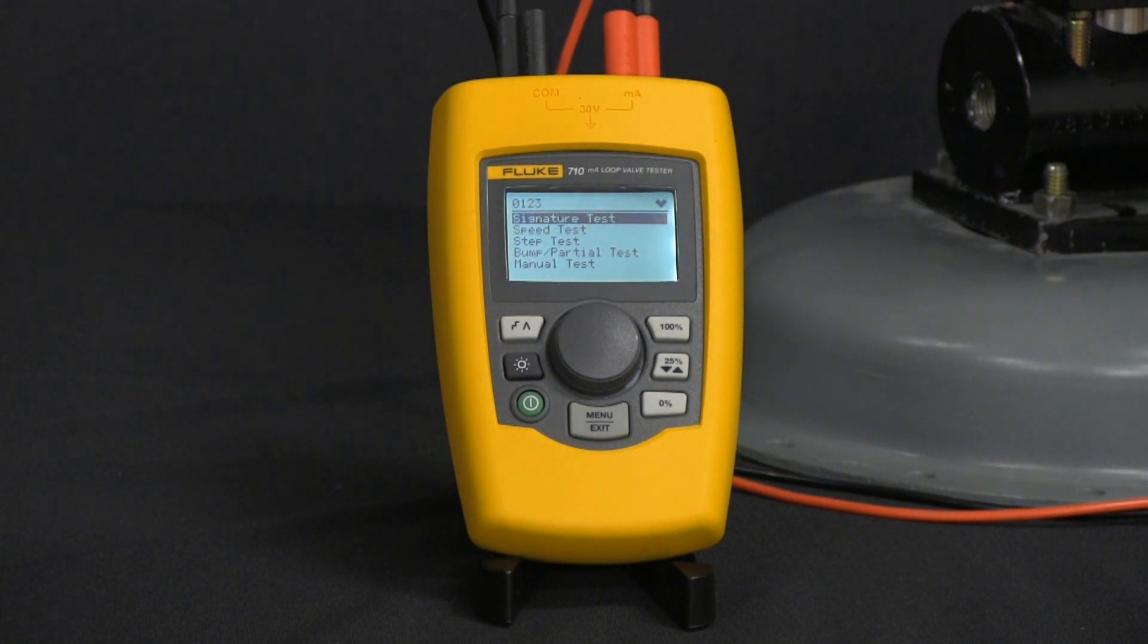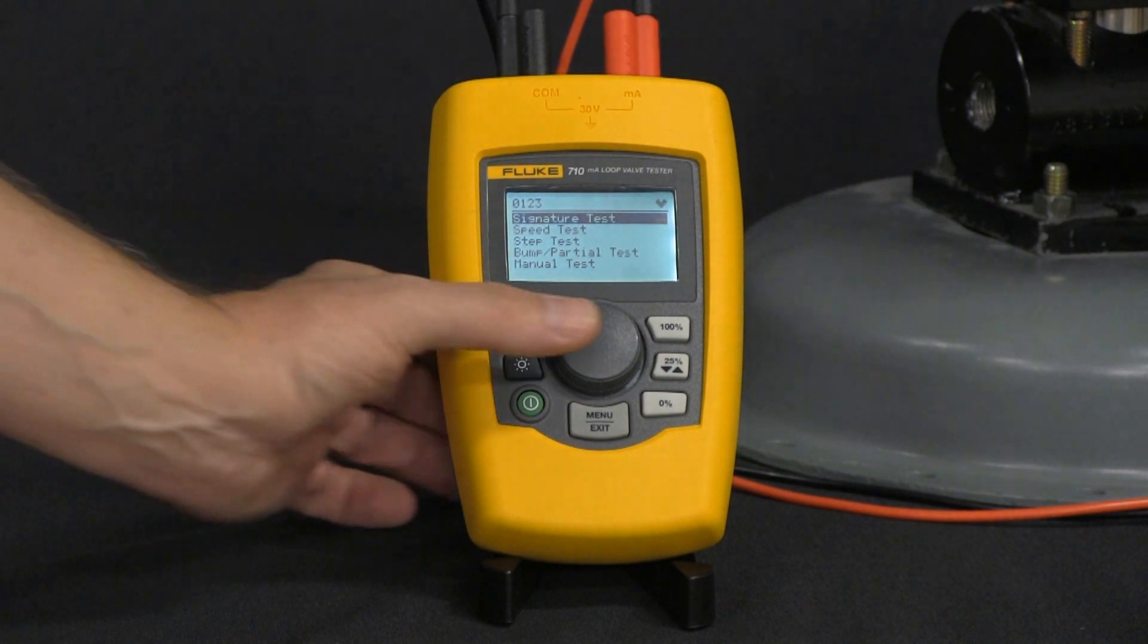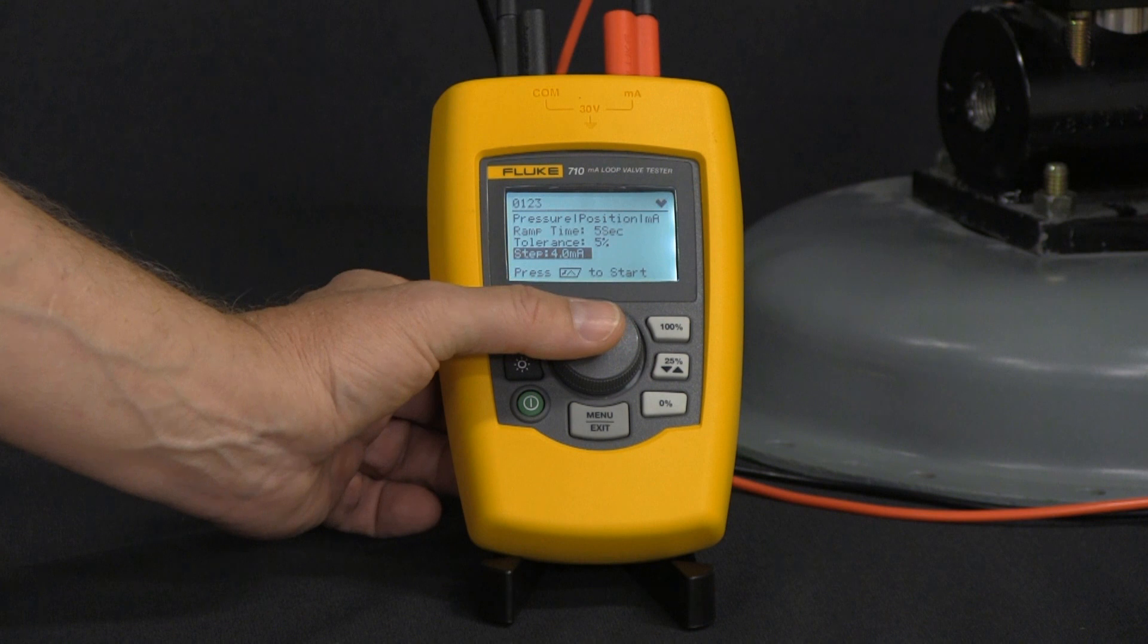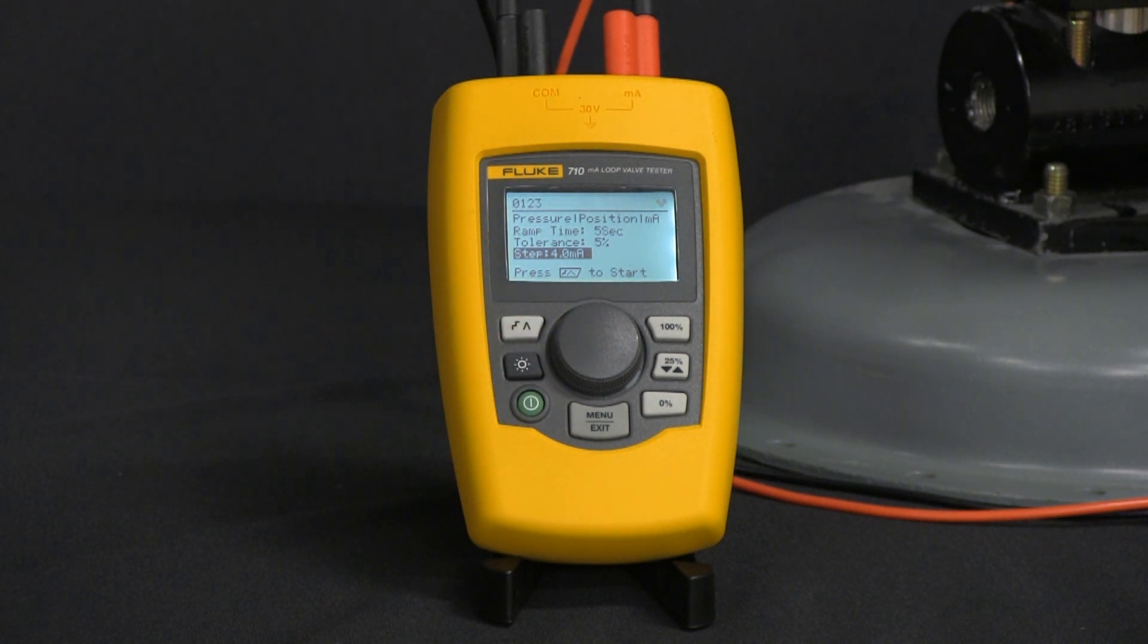The first one is signature tests. Let's go ahead and click on that. From here we can set our ramp time, tolerance, and step milliamp value. Right now we have it set for five seconds ramp time, tolerance of five percent, and step is going to be four milliamps.